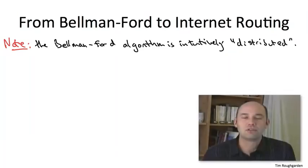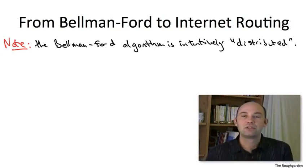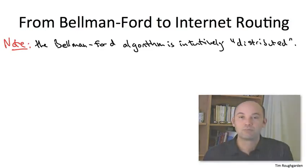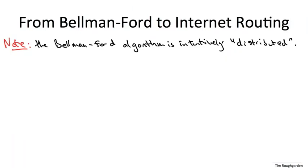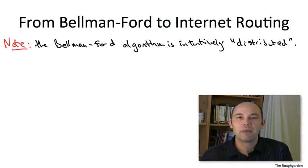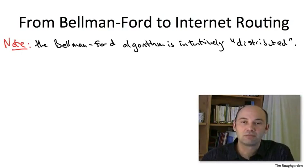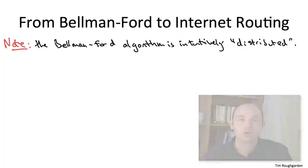Now, as you can imagine, there's a fairly long list of engineering challenges that have to be tackled to move from the basic Bellman-Ford algorithm to a routing protocol that you could conceivably use in practice. So what I'll do here is highlight some of the main issues and what's the high level solution to those issues. And with those fixes to the basic Bellman-Ford algorithm, we'll actually have something that's surprisingly close to how modern day internet protocols really work.